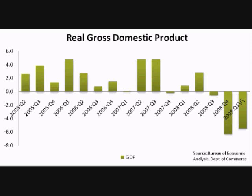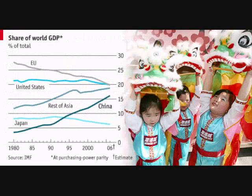GDP figures can be used to determine the health of the economy. When adjusted for inflation, the annual growth of the GDP can indicate whether the economy is growing too slow, too fast, or at the correct level. The GDP rate of growth is one of the factors used to determine what economic policies are needed, including changes in interest rates and government spending. If GDP is growing too slow, economists recommend cutting interest rates or increasing spending; if growing too fast, they recommend raising interest rates or reducing spending.